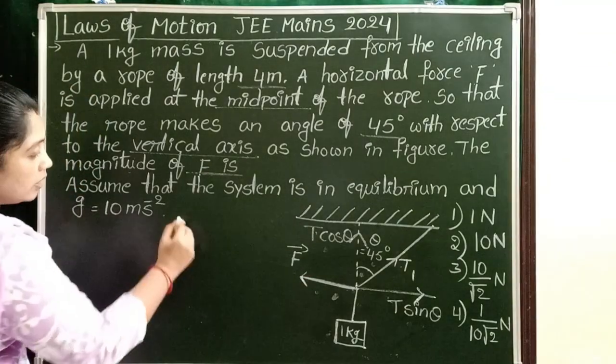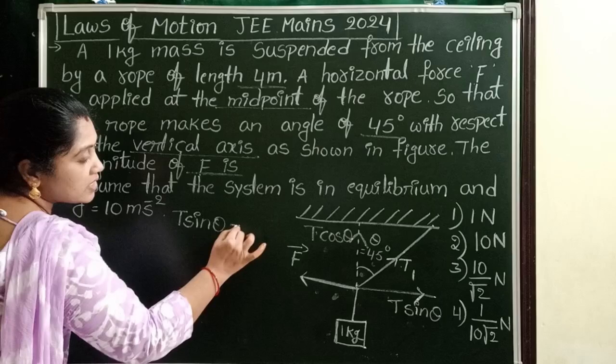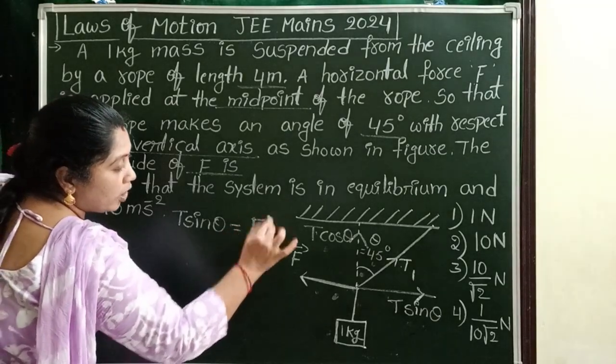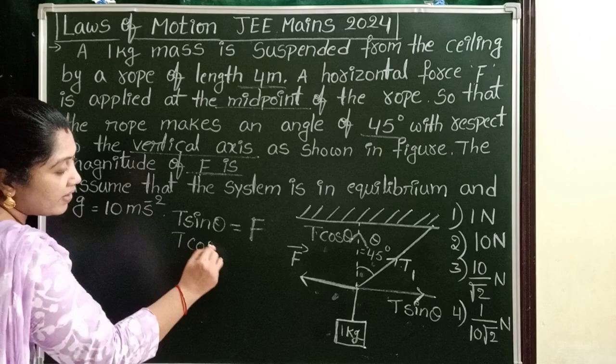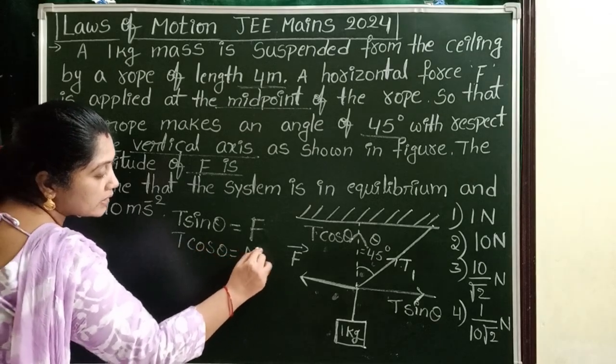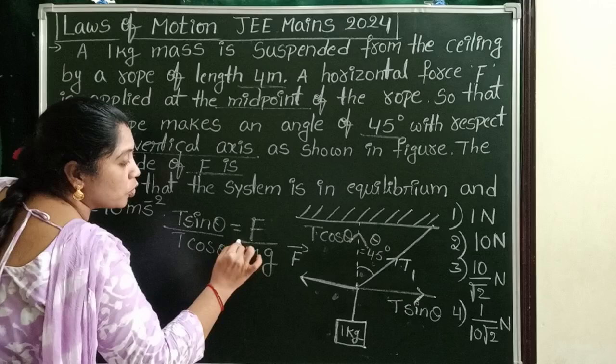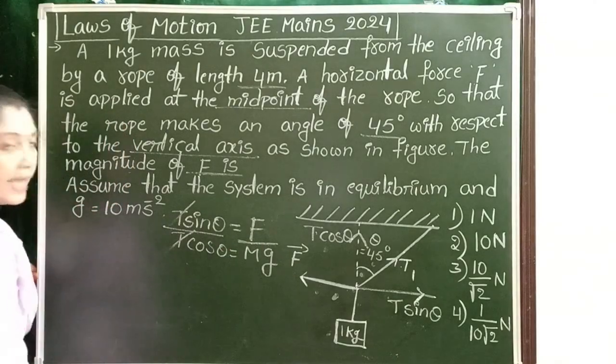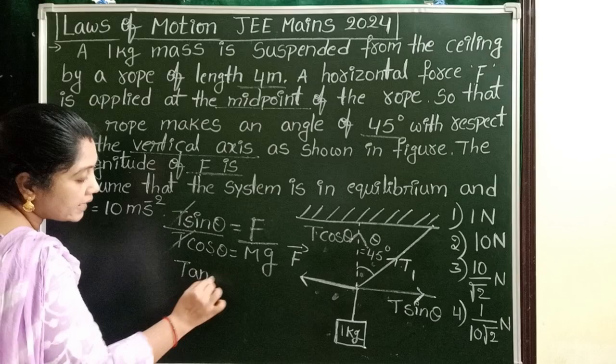Now write the two conditions. Horizontally, T sin theta equals the magnitude of the applied force. And T cos theta equals the weight of the block, that is mg. Dividing equation 1 by equation 2, T gets cancelled. Sin theta by cos theta equals tan theta.